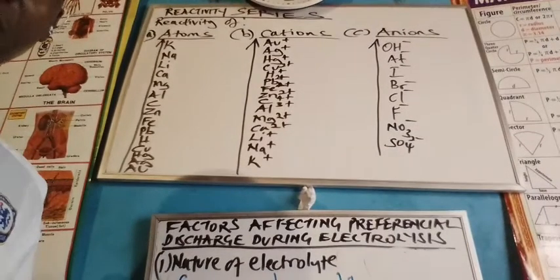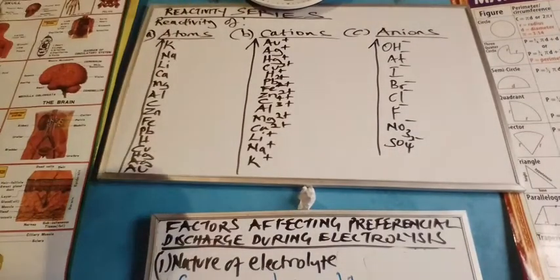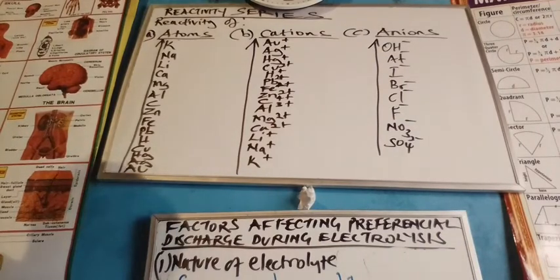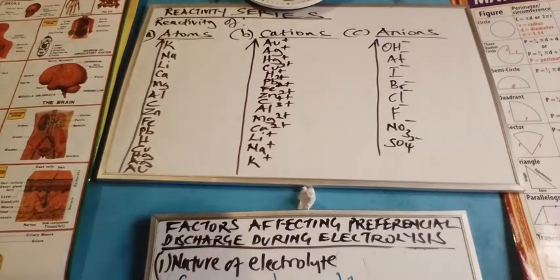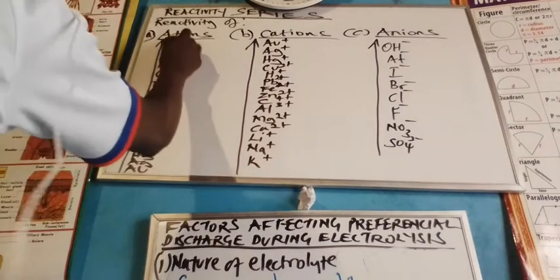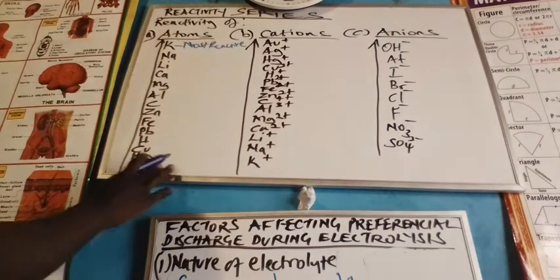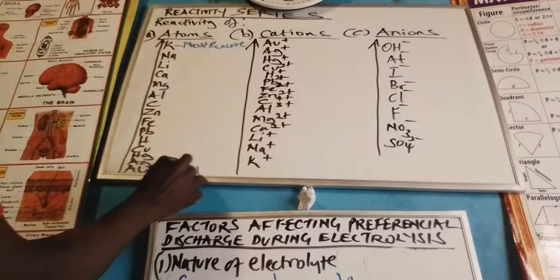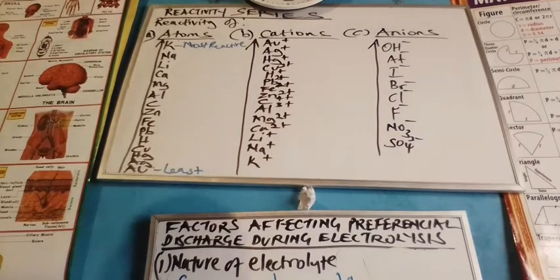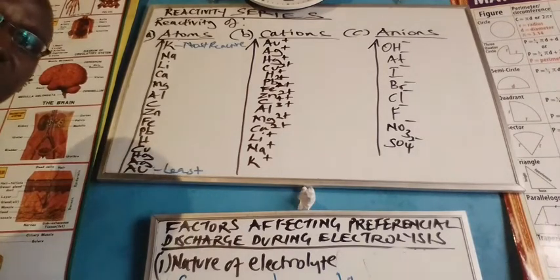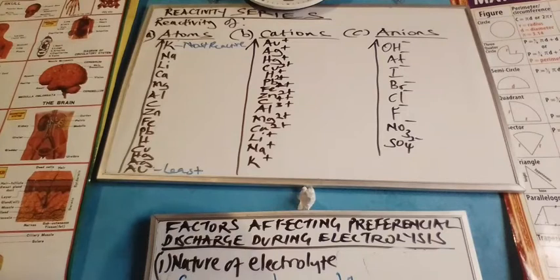Let's take a look at what's shown here. We have a well-represented structure of atoms, cations, and anions. Cations are the positively charged ions and anions are the negatively charged ions. When you look at the reactivity series for atoms, we find that at the top we have potassium, which is the most reactive, and at the bottom we have gold, which is the least reactive. So potassium is the most electropositive species, while gold is the least electropositive species.